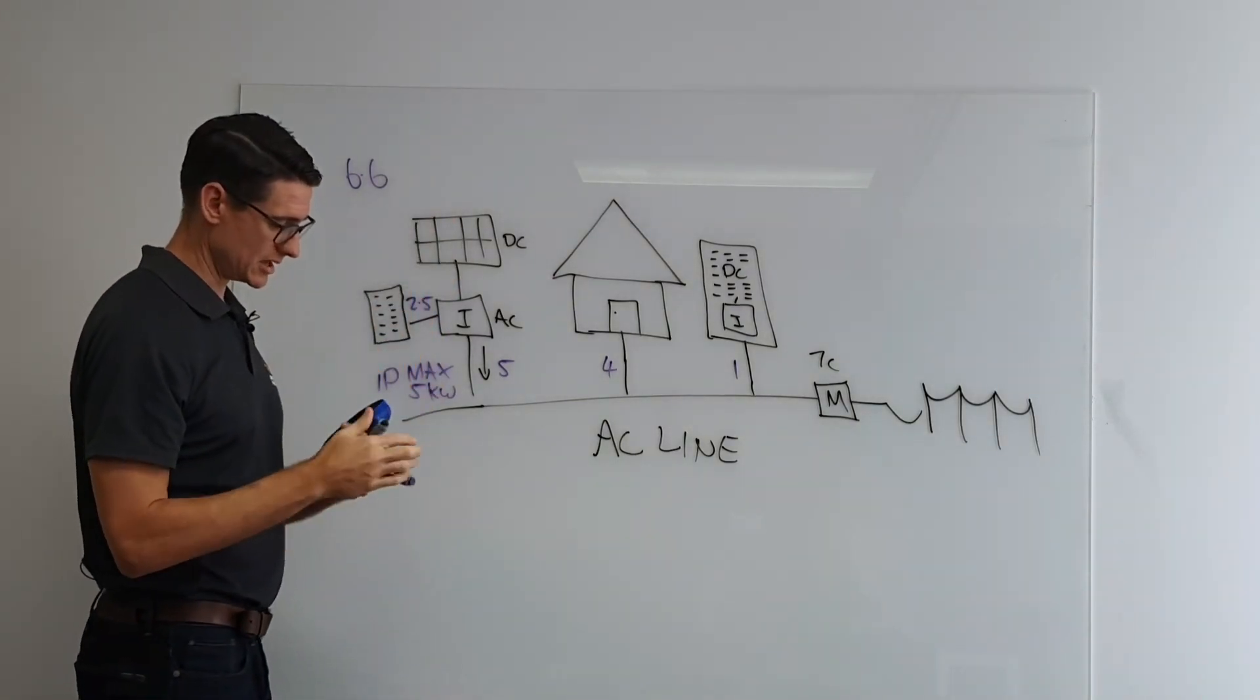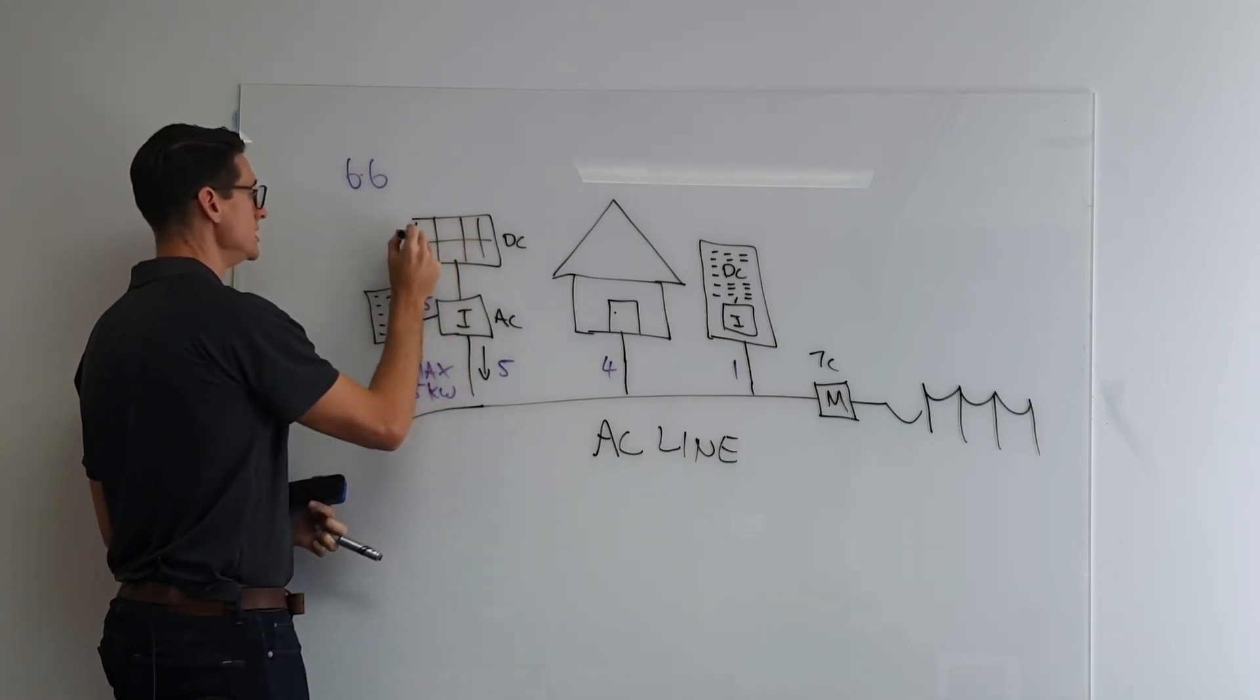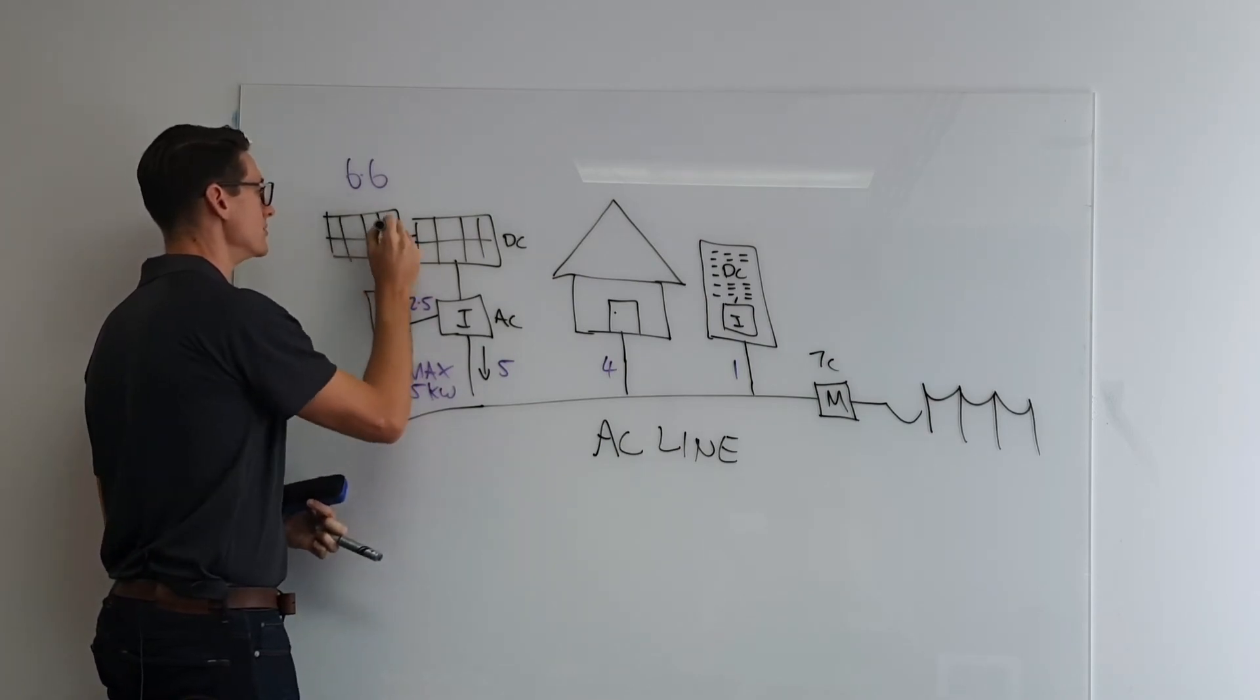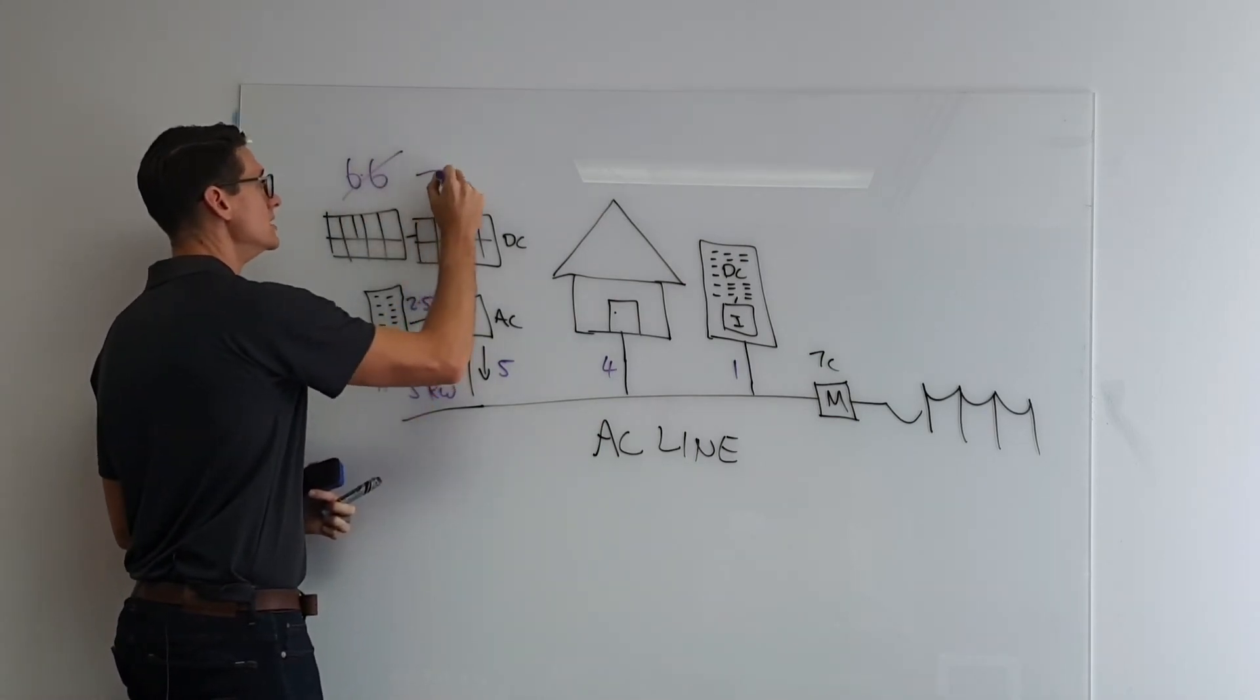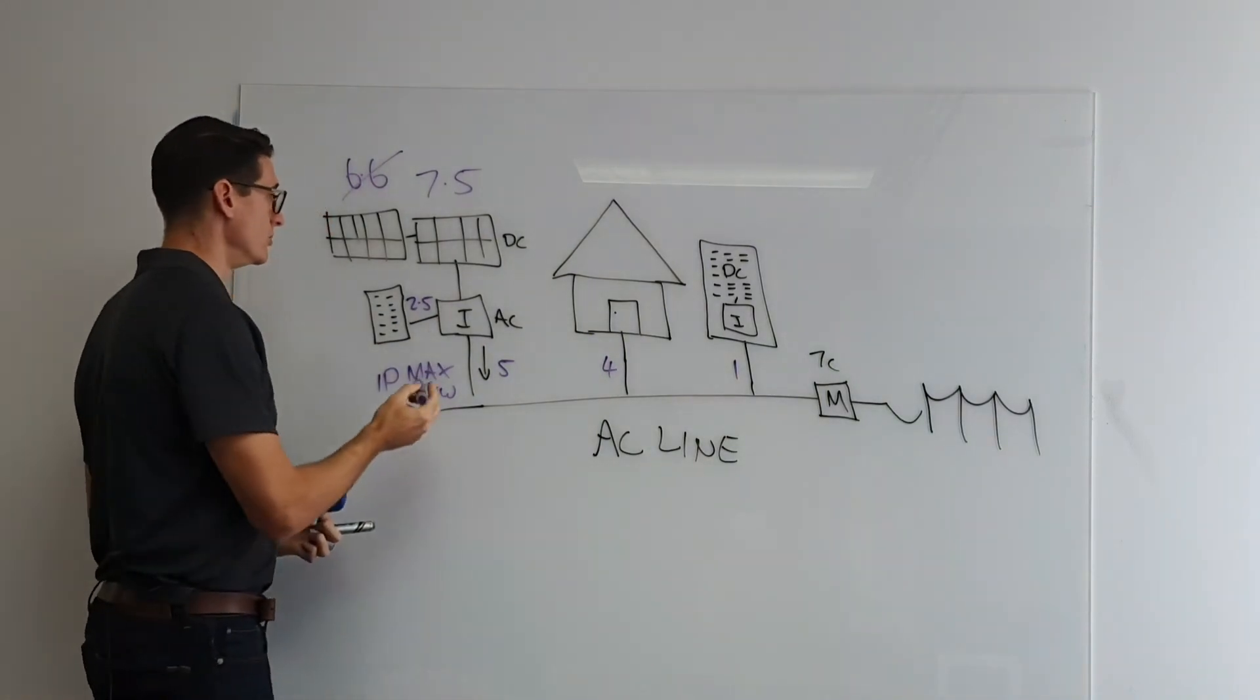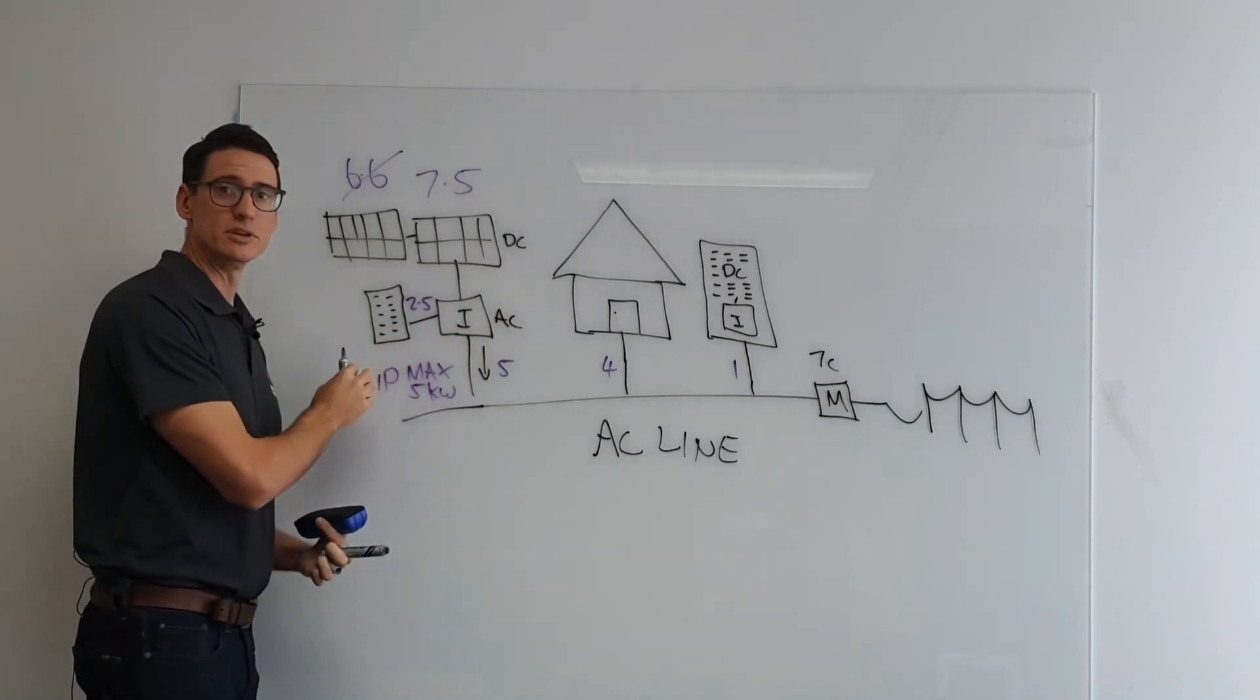So what we would essentially be doing then is loading, say, more panels onto here, maybe there's another string or however it works, depending on the type of inverter and such, and you could potentially have up to, say, in this example, 7.5 kilowatts worth of power, with 5 going to the home, 2.5 going to the battery itself.